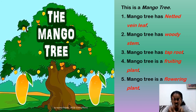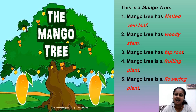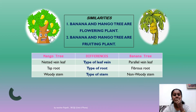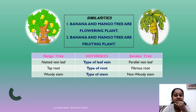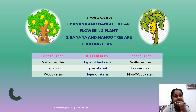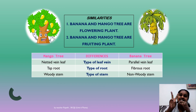Now let's look at what is the same between the two trees. The similarities between the mango tree and the banana tree are: both are flowering plants, and both are fruiting plants. Similarities means same characteristics.